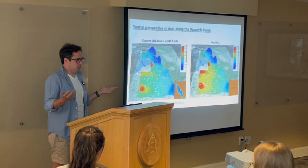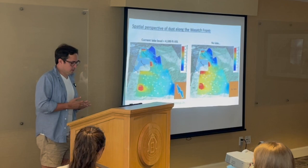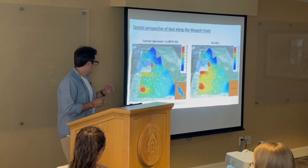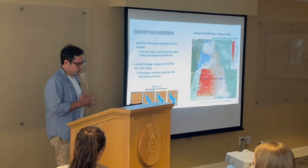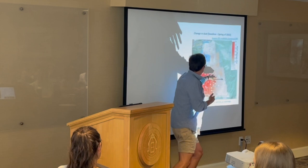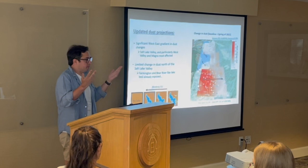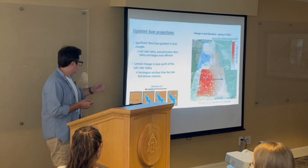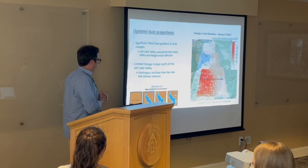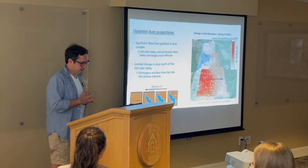Any changes between the two simulations can be directly attributed to the Great Salt Lake shrinking, or in this case being completely desiccated. You see a pretty big increase in PM2.5. When we look at the percent change, what's really striking is that it appears more concentrated on the western side of the valley. This could be an environmental justice issue, where a less well-off population on the western part of the valley could be more impacted by a shrinking Great Salt Lake.